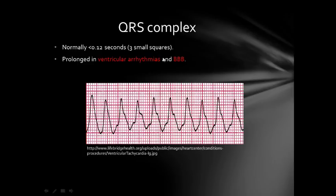The fourth thing is the QRS complex. Normally it is less than three small squares in width. It is prolonged in ventricular arrhythmias and bundle branch blocks. For example, ventricular tachycardia — since it is ventricular in origin, the QRS complexes are wide, definitely more than three small squares. This is ventricular tachycardia.